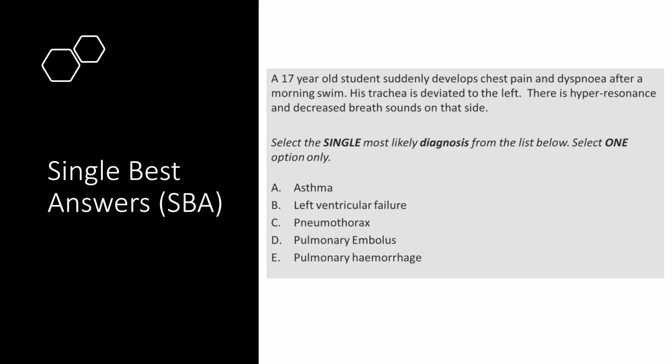Let's look at the second half of the paper: the single best answers. The MSRA website states that half of the questions will be allocated to extended matching questions and half to single best answers, so you will get a fair share of both types. In this question type you'll be given multiple plausible options and you've got to pick the best answer that suits the scenario. For example: a 17 year old student suddenly develops chest pain, his trachea deviates to the left, and there is hyper-resonance — with pattern recognition I can immediately say this is a pneumothorax.